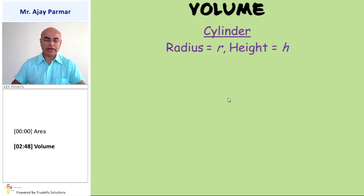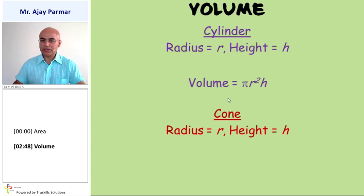For a cylinder, the radius and height represented by R and H, then its volume will be pi R square H. But for a cone, where the radius and height are represented by R and H, there will be one-third the volume of the cylinder, so volume of the cone will be one-third pi R square H.